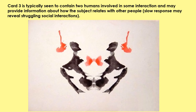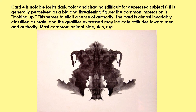This is the third card in the Rorschach inkblot test. It is almost always perceived as two people doing something — maybe they're going bowling or having a chat. We use this card to find out how people relate to social interactions: how do they respond to images of people in some social interaction?